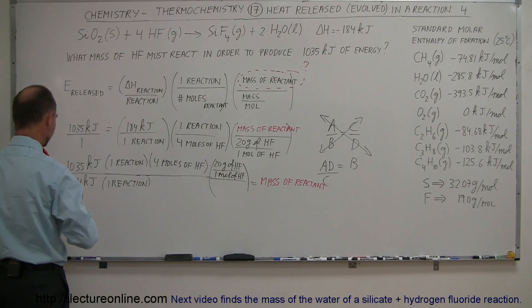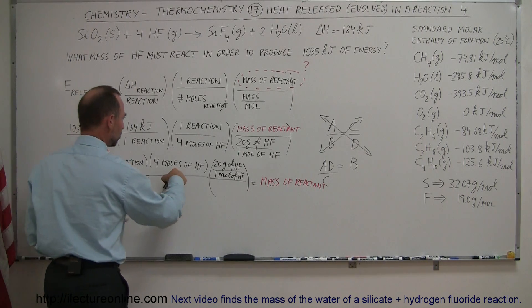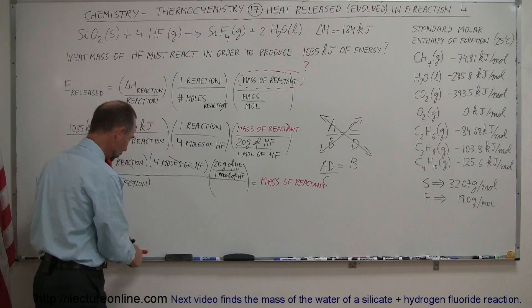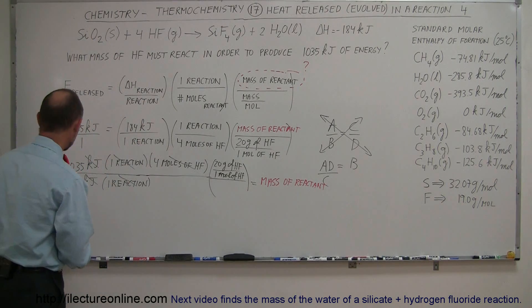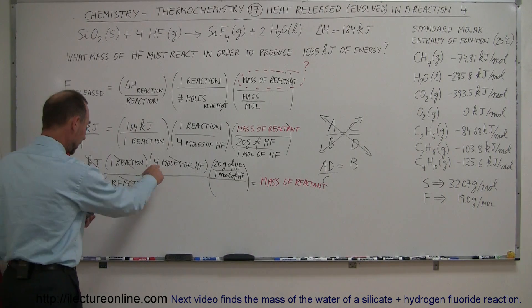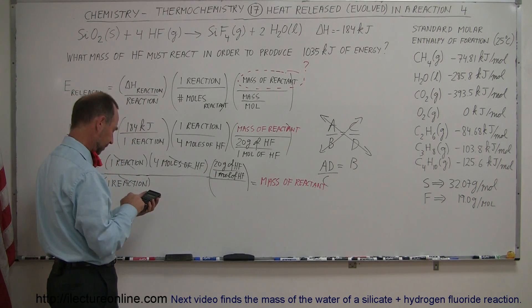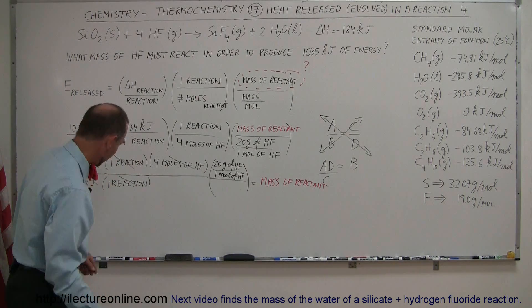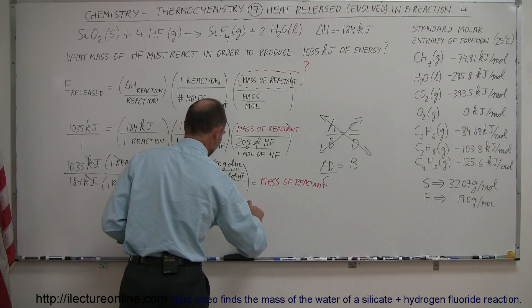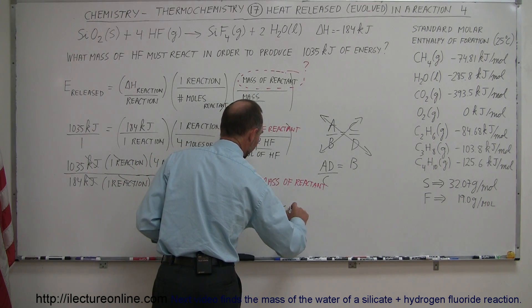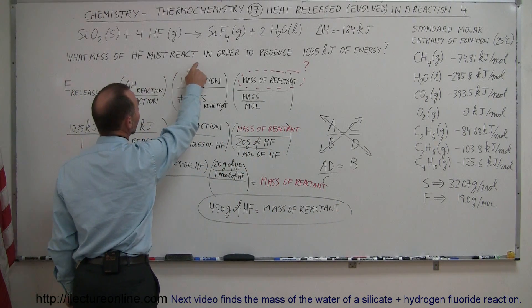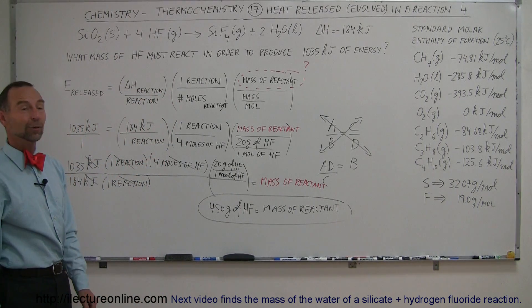Kilojoules cancels out. Reaction cancels out. Moles of hydrogen fluoride cancels out. We're left with grams of hydrogen fluoride — that's the mass we're looking for. Now using a calculator: 1035 divided by 184, multiplied by 4, multiplied by 20, gives us 450 grams of hydrogen fluoride. So 450 grams of hydrogen fluoride is the mass of the reactant — that's the answer to what mass must react to produce 1035 kilojoules.